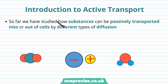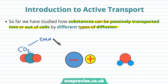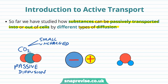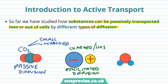So far we've covered how substances can passively move across the membrane into or out of cells via different types of diffusion. For example, we've talked about how molecules like CO2, which are small and uncharged, move into the cell via passive diffusion. We've talked about how certain charged particles, like ions, can move into or out of the cell via facilitated diffusion. And we've also talked about how water can move through cell membranes via osmosis. So these are three transport pathways we've come across.